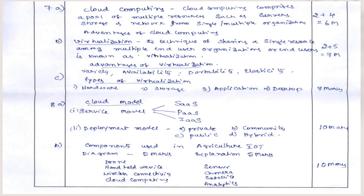The C question was types of virtualization — you will list down all virtualization types and write each type in detail mode, which carries 7 marks. The A question was cloud model — you will determine what is cloud model, write what SaaS, PaaS, and IaaS are, and in the deployment model explain private, community, hybrid, and public types. Service model carries 5 marks and deployment model carries 5 marks, totally 10 marks.